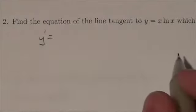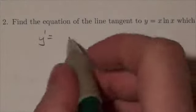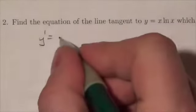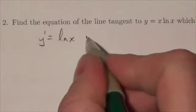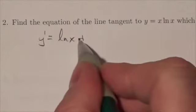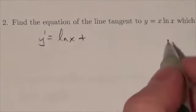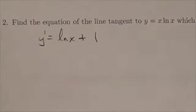So if I take the derivative, the derivative of x is 1 times the natural log of x, plus the derivative of the natural log is 1 over x times x, which is just going to give me 1.